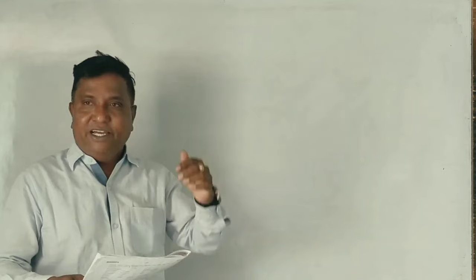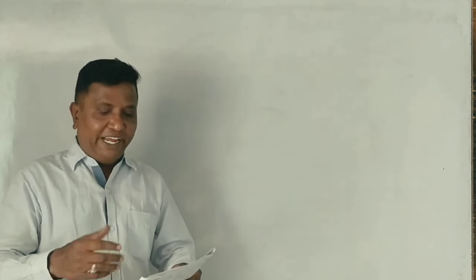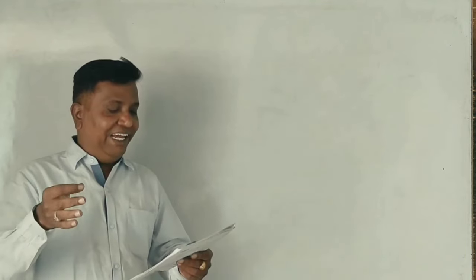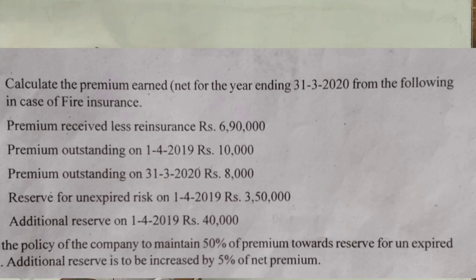Okay guys, general insurance company. Earlier, from Ben Lowe Central University, in the 2020-21 question paper, which is the exam — in Section C, question 11A and 11B. In Section C, there is a theory called 11B. Calculate the premium earned net for the year ending 31st March 2020, from the following, in case of fire insurance.